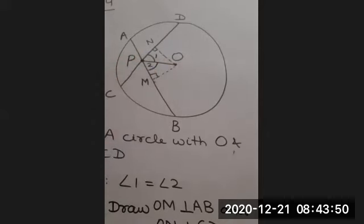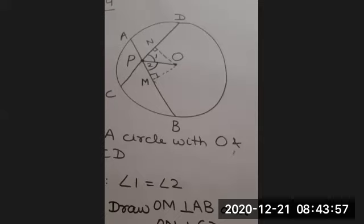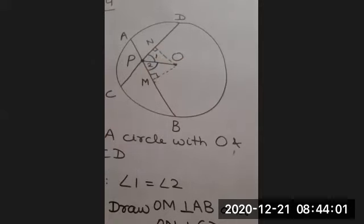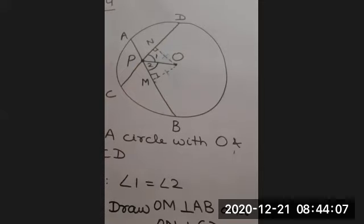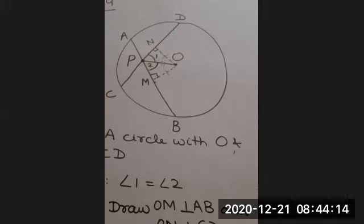angle M is equal to angle N, 90 degrees. OM is equal to ON. Why? Equal distance from the center. And OP is common.